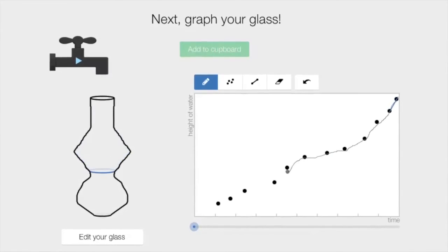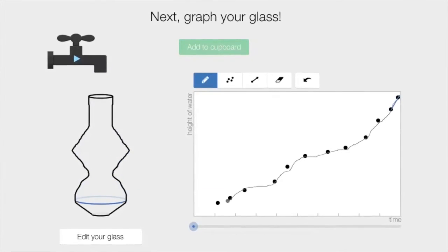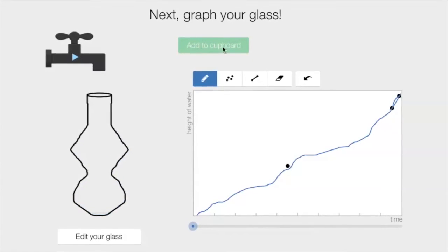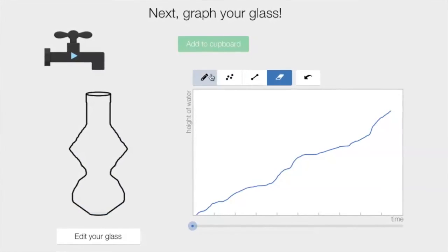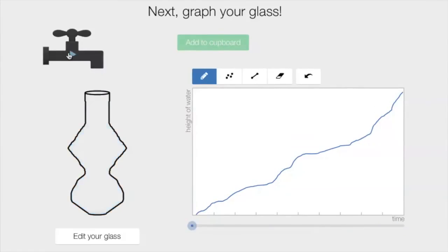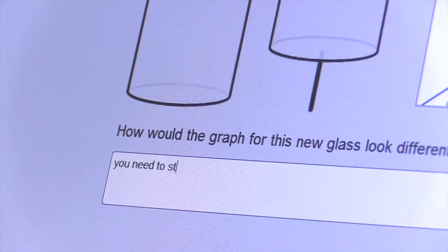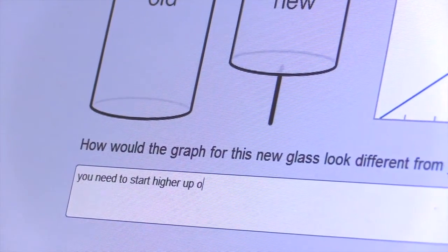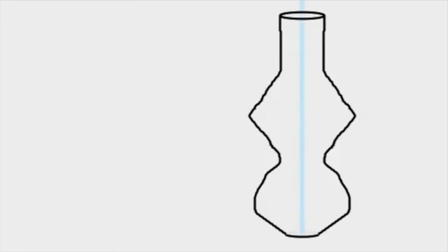In general, I feel that the Desmos waterline activity is a powerful learning tool for students to begin relating speed of motion and slope. This is especially true because of the instant feedback it provided the students with. The application is very visual and the play-pause aspect gave the students time to analyze the situation more carefully. This cannot be done in a paper and pencil learning environment or with a beaker and water in real life.